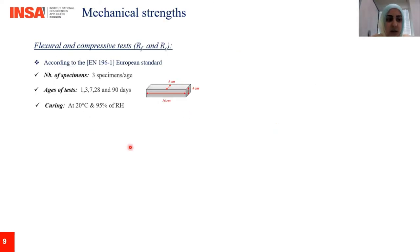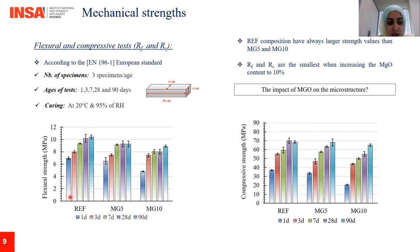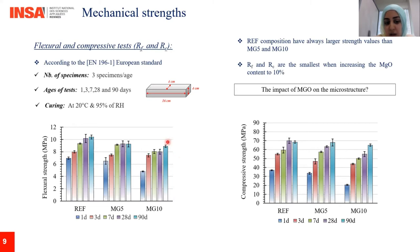Regarding mechanical strength, we performed flexural and compressive tests according to the European standard. The specimens were cured in a humid chamber at 20 degrees. In these two diagrams you can see the resistance to flexion and to compression for the three proposed mortars up to 90 days. You can notice that the strength values of the reference are always larger than those of the compositions with MgO, and with increasing MgO content to 10%, the corresponding resistance is smaller than with 5% of MgO.